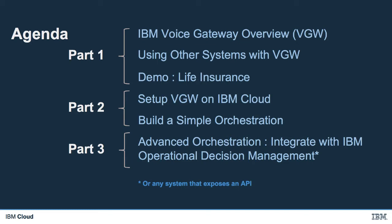Part two will start the build phase. We'll look at setting up a Voice Gateway instance on IBM's cloud and connecting that to a simple orchestration. In part three, we'll connect Voice Gateway to a decision service running in ODM. This will act as our quotation engine and calculate the price of our life insurance.